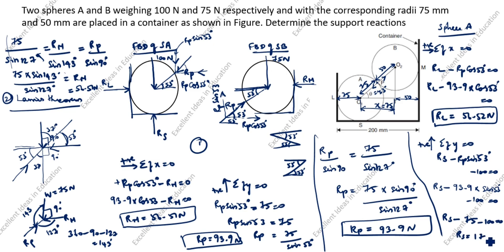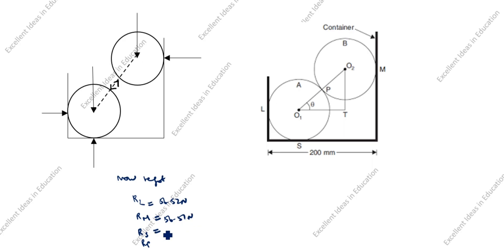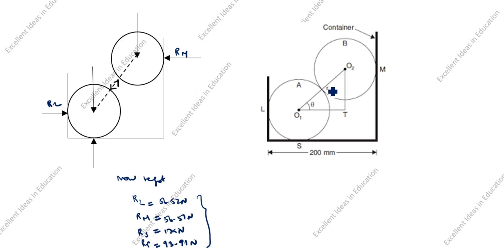So RS equals 175 Newton. Now we have all the support reactions: RL equals 56.52 Newton, RM equals 56.51 Newton, RS equals 175 Newton, and RP equals 93.91 Newton. You can see these in the free body diagrams of sphere A and sphere B. This is a very important problem. Thanks for watching this video.